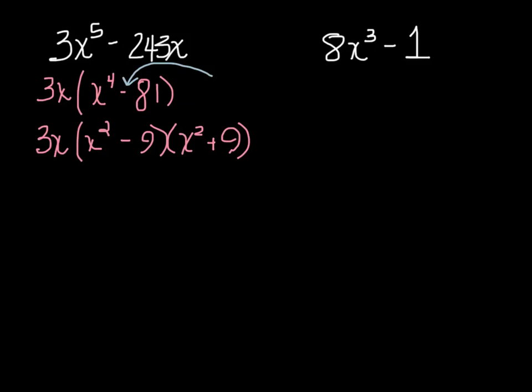Again, I notice that this is the difference of squares so go one more step and I have 3x times x minus 3 times x plus 3 and x squared plus 9 cannot be factored any further.